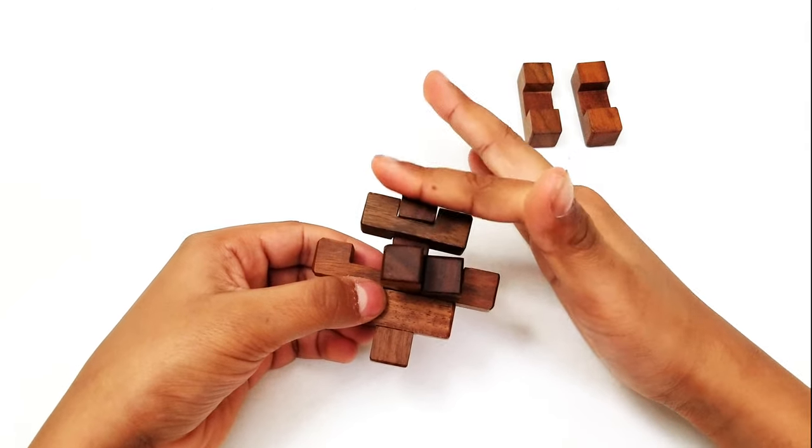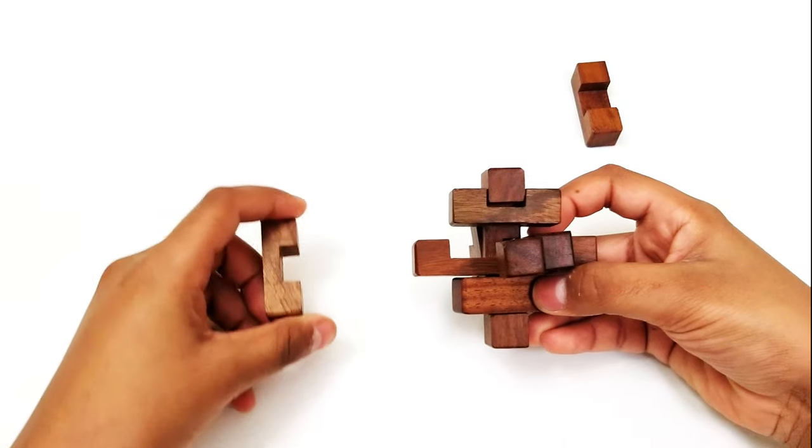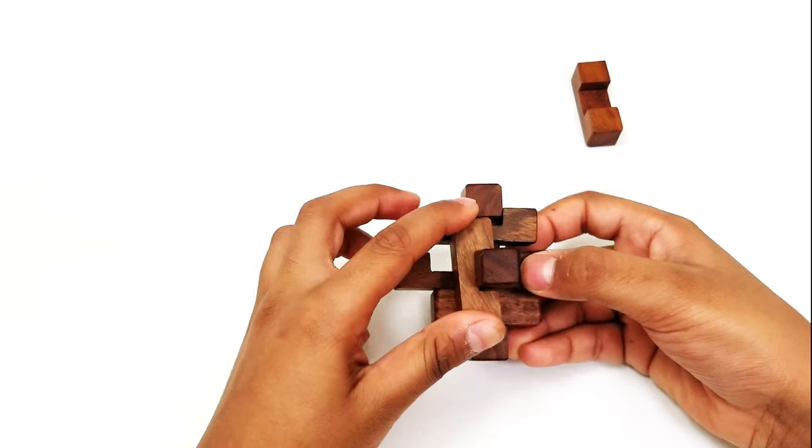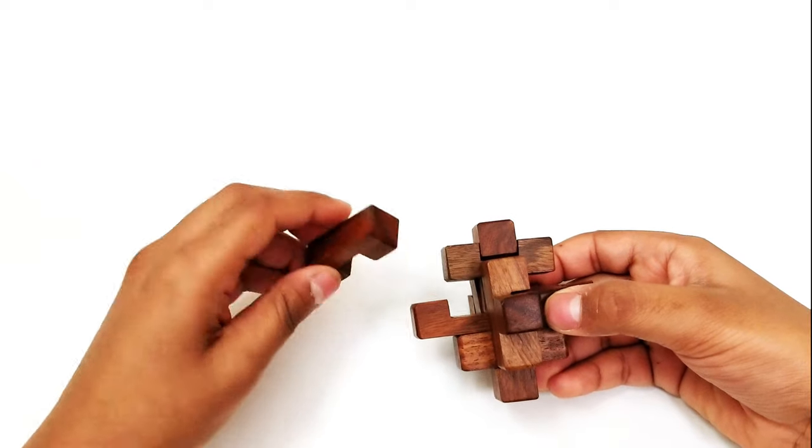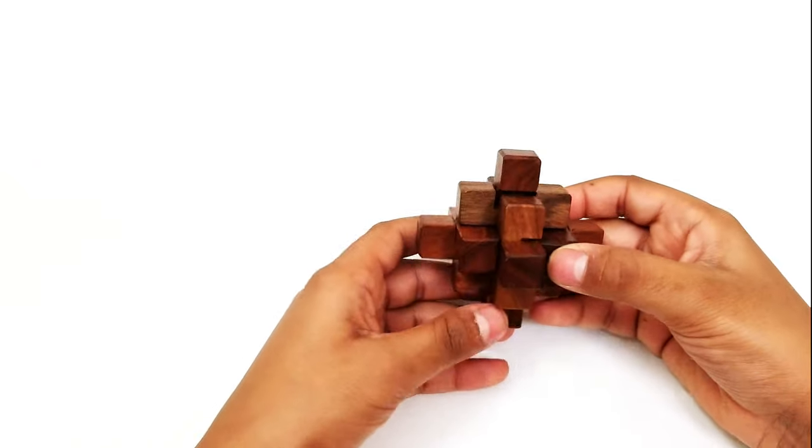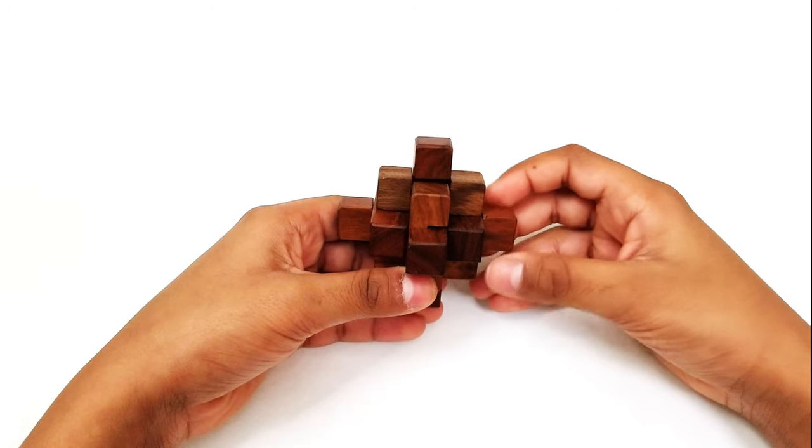Then take one of these pieces and slide it in like this. Then take your last piece and slide it in through here. You'll have a fully solved 9-piece wooden burr puzzle, but before you go anywhere, you should notice you have a loose log piece.